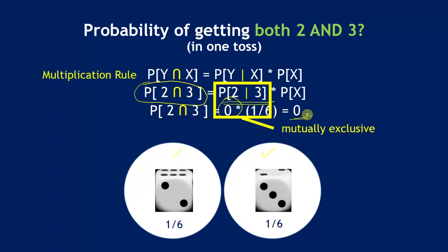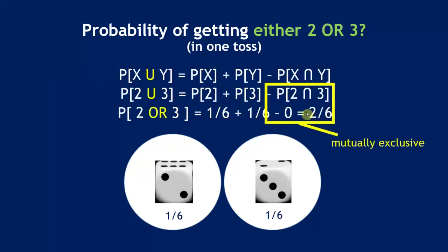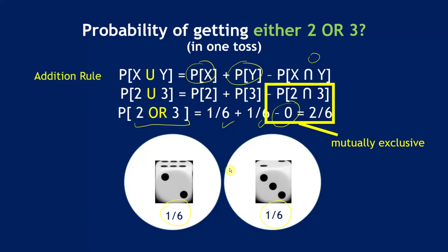The probability of getting either 2 or 3 uses the addition rule: p(2) + p(3) − p(2 ∩ 3) = 1/6 + 1/6 − 0 = 2/6. Because these events are mutually exclusive with zero overlap, there's nothing to subtract. When events are mutually exclusive, you simply add the individual probabilities.